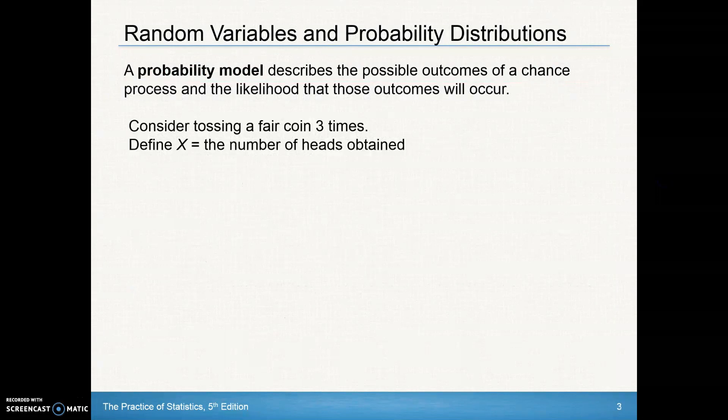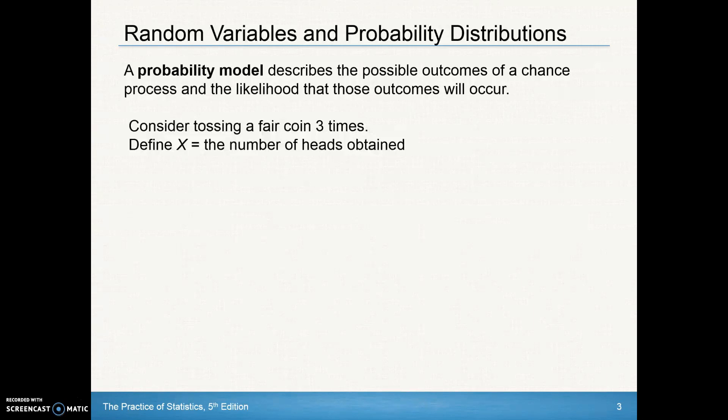A probability model — we've talked about that in the last chapter. A probability model has to have a listing of all the events in the sample space with their associated probabilities. A probability model describes the possible outcomes of a chance process and the likelihood that those outcomes will occur.